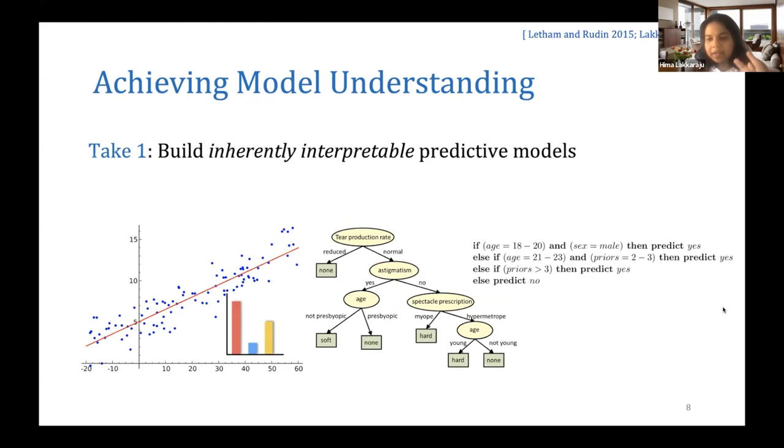Of course, there are some caveats to that. If there is a regression model with coefficients for about a thousand features, it's very reasonable to argue whether that could even be considered interpretable, because it's hard for a human to process a thousand features and think about how they all relate to each other and their importance.